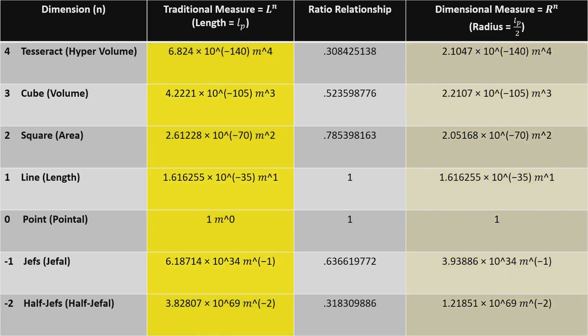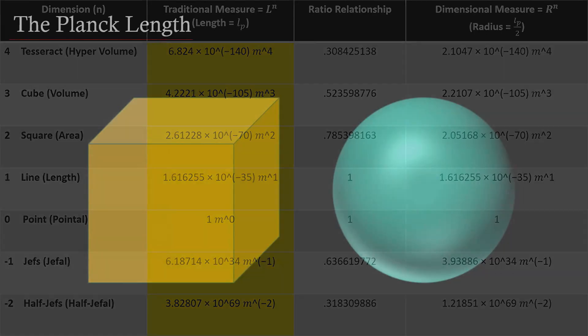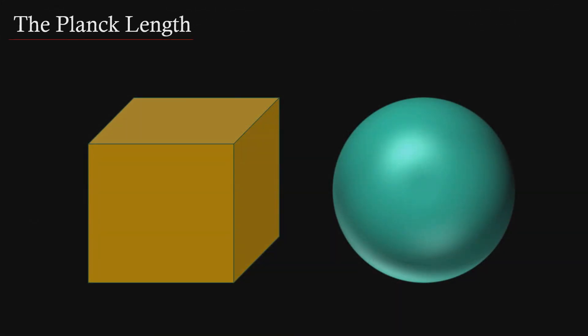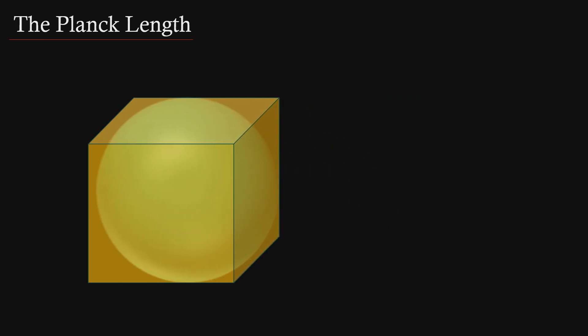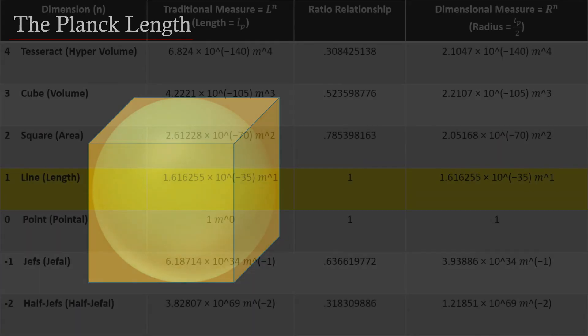The traditional calculations will be correct, but the dimensional calculations will probably not be. How is this possible? Measure with a square shape and it's right? Measure with a sphere shape and it's probably wrong, even though we've shown that a direct ratio relationship exists between squares and spheres for each dimension?